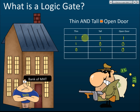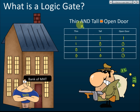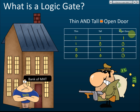The last customer is fat and short, so of course we cannot open the door. So with the AND instruction — thin and tall — the first person is thin and tall, the second is thin but short, the third is fat but tall, and the last is fat and short. The security guard makes judgments and decisions through this logic process.